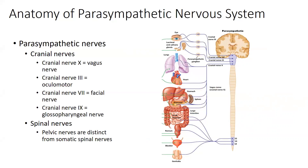The pelvic nerves are distinct from the somatic nerves in that region. In spinal segments S2, S3, S4, you have your pelvic nerves which travel into the pelvis and synapse at ganglia close to the organ, then the postganglionic neuron goes from that ganglia to the organ. We don't want you to confuse those with the somatic spinal nerves, which go to your legs and innervate voluntary skeletal muscle. So you have pelvic nerves, which are your autonomic nerves, distinct from the somatic nerves going to the legs.